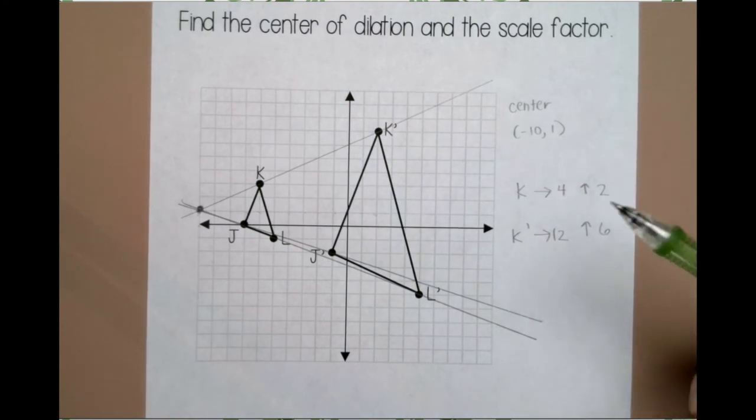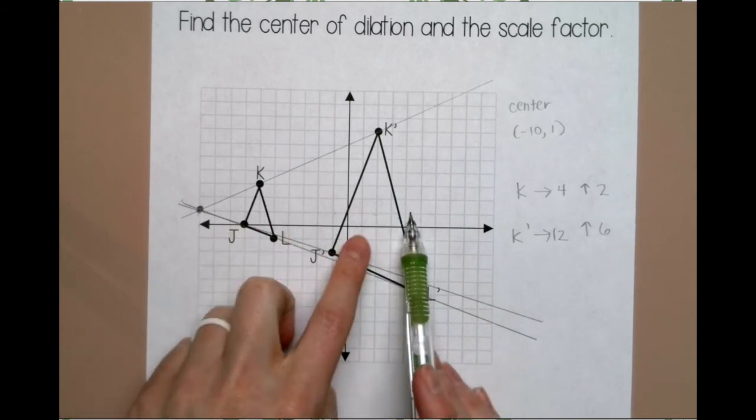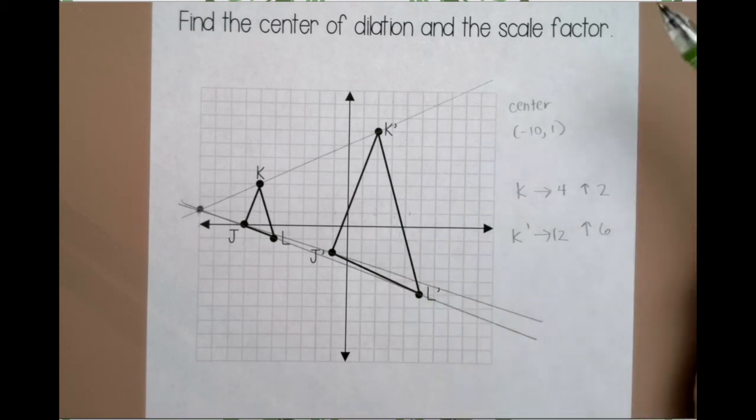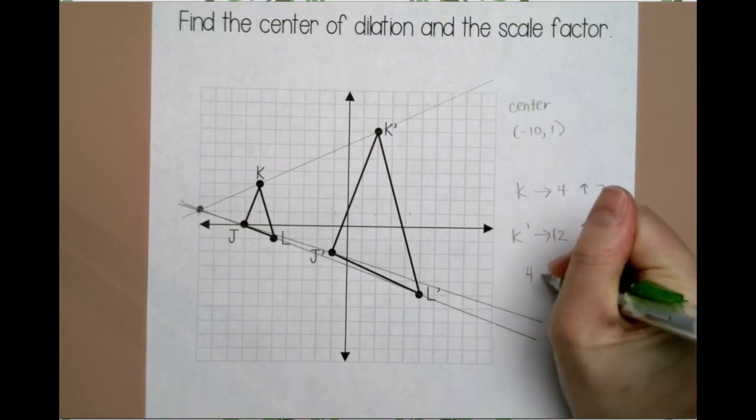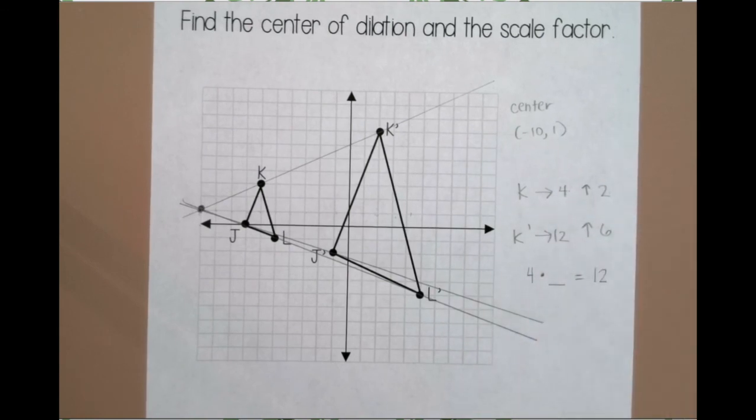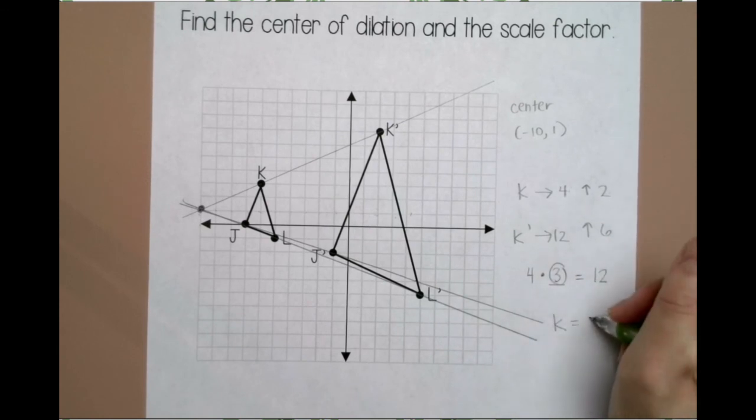So what you want to ask yourself is, first of all, did my shape get bigger or smaller? You can tell here it got bigger. That means your scale factor has to be greater than 1. Then you want to ask yourself, what could I multiply by to get from 4 to 12? Or from 2 to 6? So 4 times what number gives me 12? And that would, of course, be 3. So my scale factor for this problem is 3.